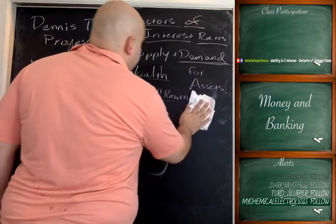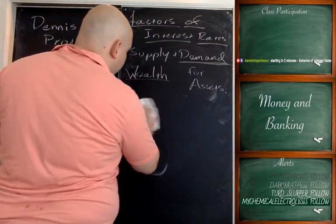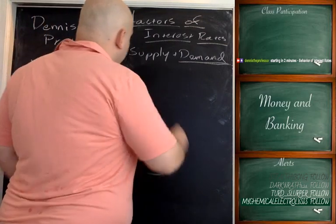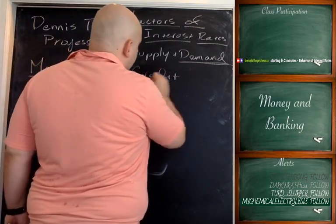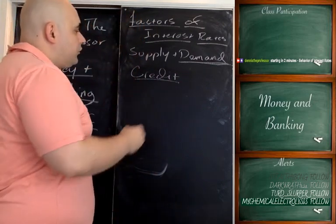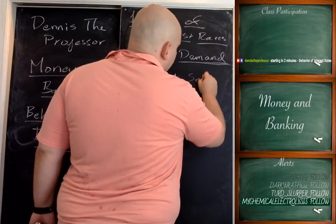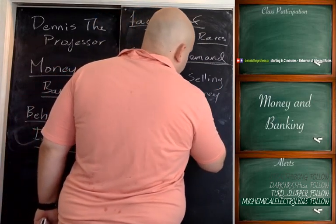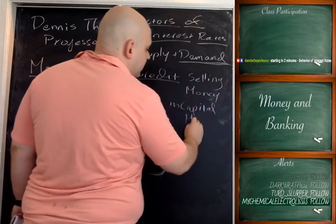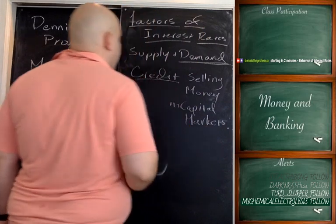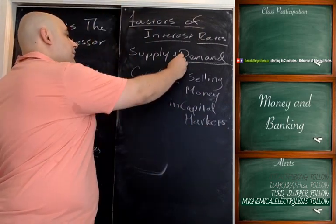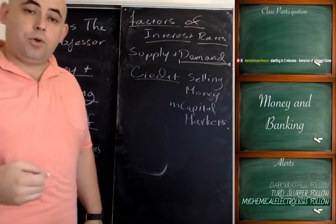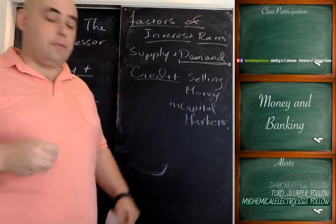Those are the factors affecting the demand for assets, and we'll evaluate how each changes the demand for different assets — in this case, debt or credit. When you have credit, what you're doing is selling your money. Buying someone else's debt means you're selling money in capital markets — that's why they're called capital markets, because it's where you sell your excess money. Buying someone else's debt is a demand for an asset, because you'll be receiving interest and recording it on your books as an asset since someone owes you that money.